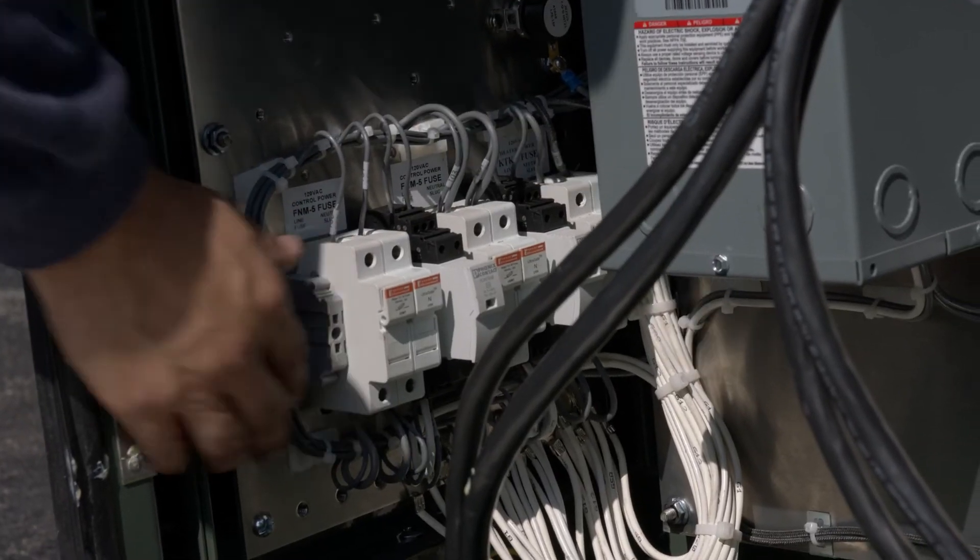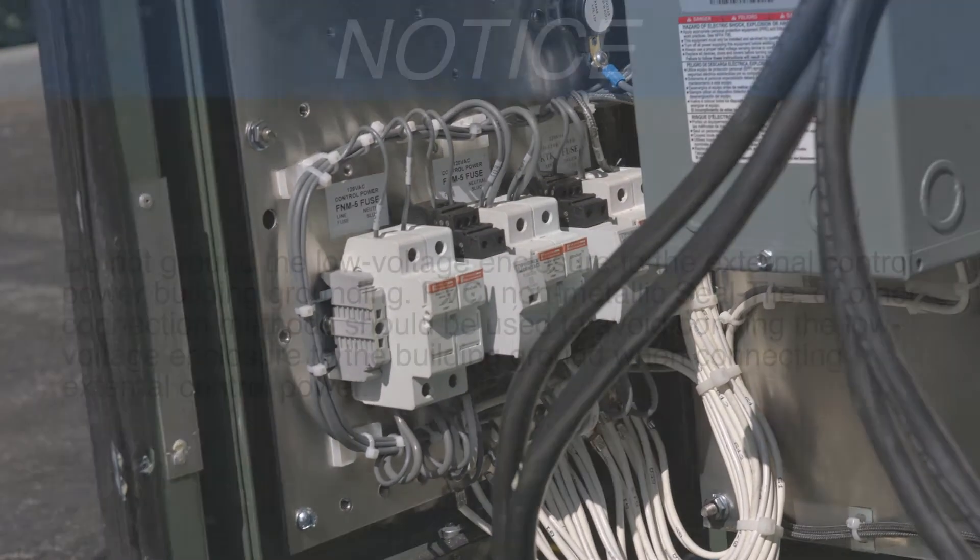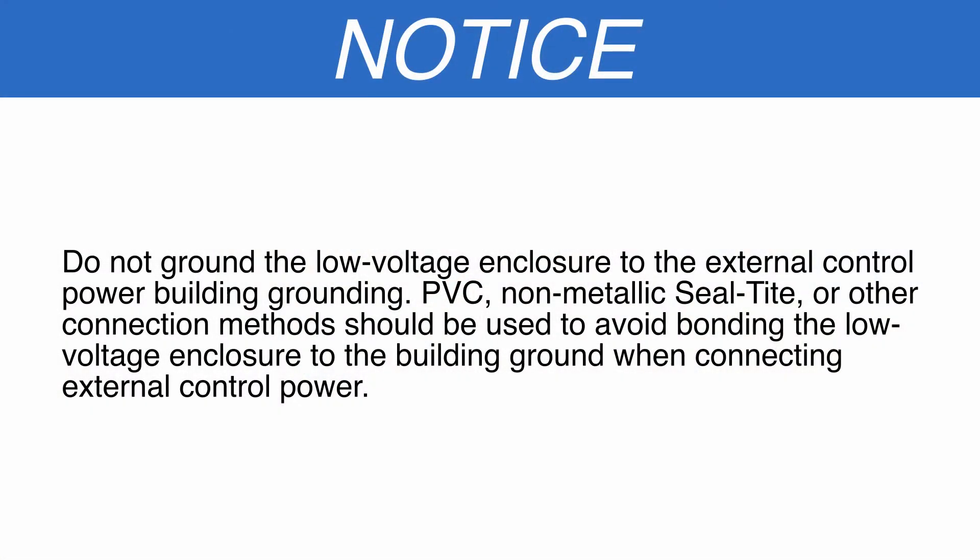To connect external control power, connect the line and neutral to the fuse block. Notice, do not ground the low voltage enclosure to the external control power building grounding. PVC, non-metallic seal tight or other connection methods should be used to avoid bonding the LVE enclosure to the building ground when connecting external control power.